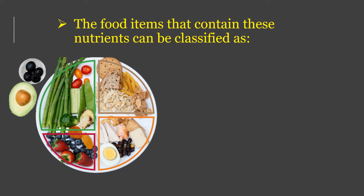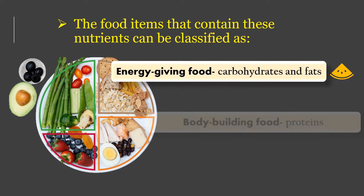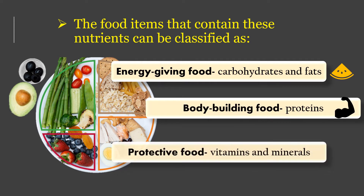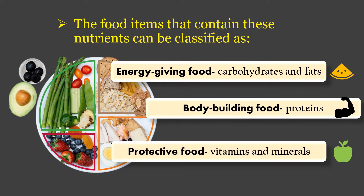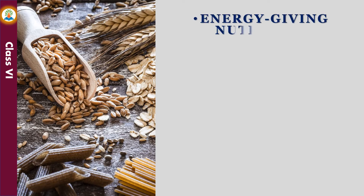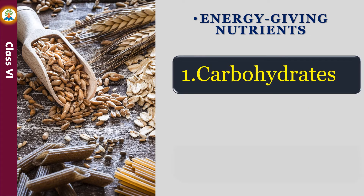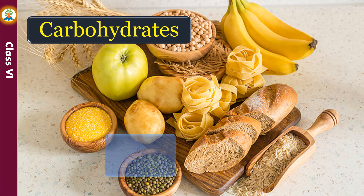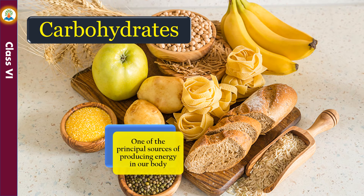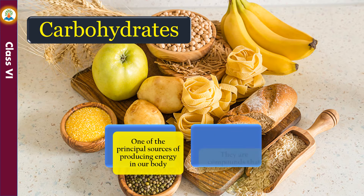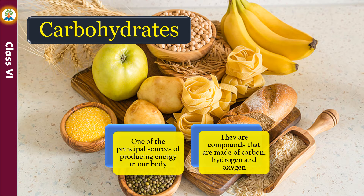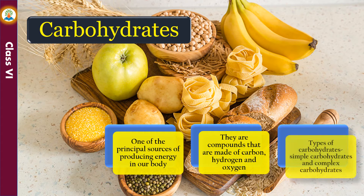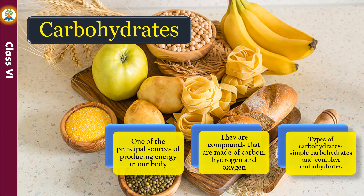The food items that contain these nutrients can be classified as energy-giving food, bodybuilding food, and protective food. Energy-giving foods are rich in carbohydrates and fats. Carbohydrates are one of the principal sources of producing energy in our body; they are compounds made of carbon, hydrogen, and oxygen. Carbohydrates are of two types: simple carbohydrates and complex carbohydrates.